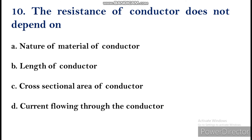The tenth question: the resistance of a conductor does not depend on which factor? Using R = ρL/A, resistance depends on length L, area of cross-section A, and resistivity ρ (which depends on the nature of the material). However, resistance does not depend on the current flowing through the conductor — in fact, current depends on resistance. The answer is option D.